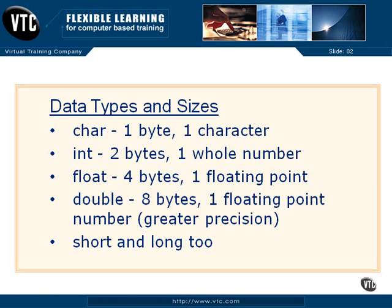There's an integer, which usually is two bytes long, and that holds one whole number with no remainder. A floating point, or a float, is generally four bytes of storage and will contain one floating point number.